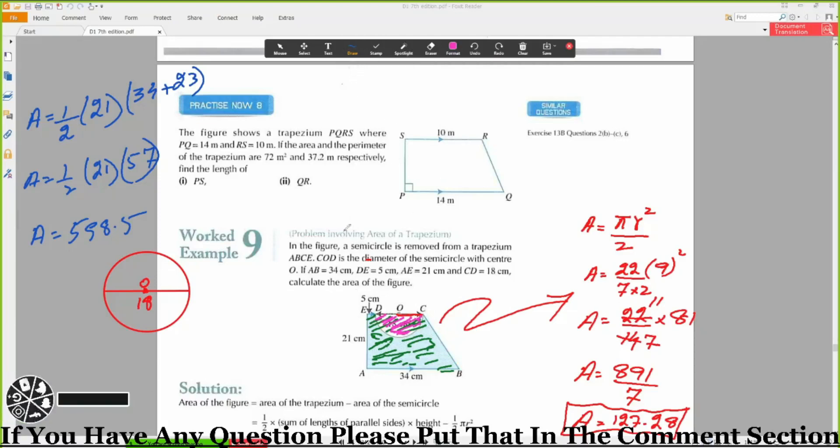The shaded region area will be equal to 598.5, because that area is the bigger one, minus 127.28. So this will be equal to 471.22.